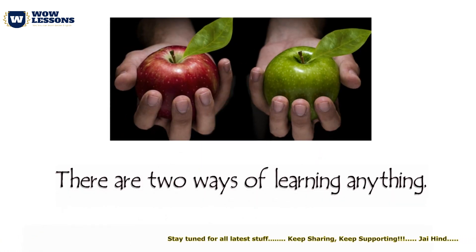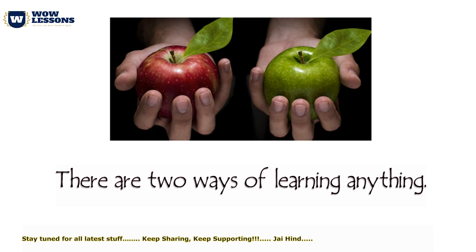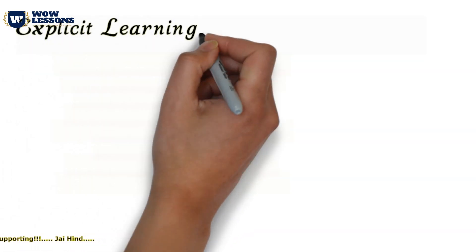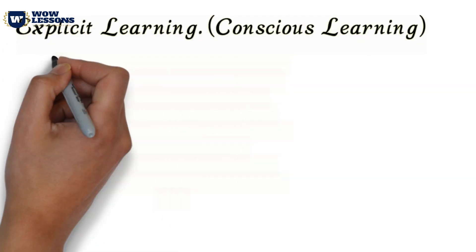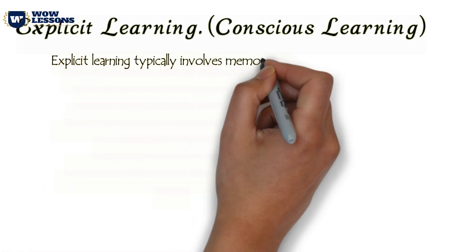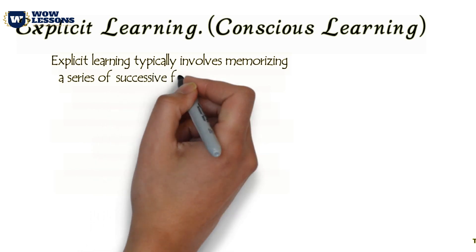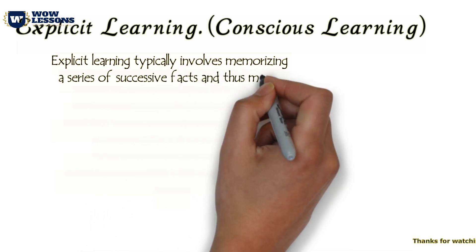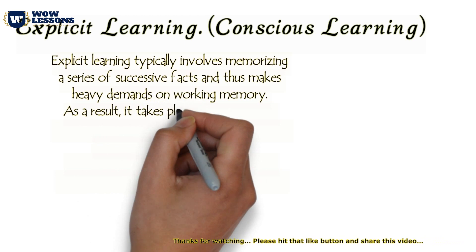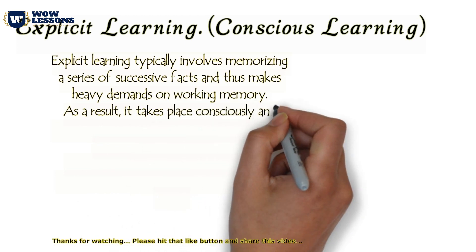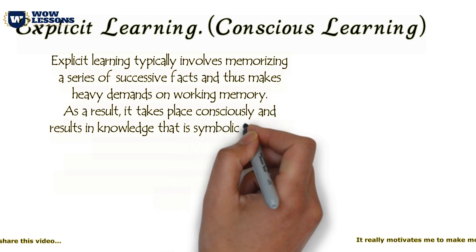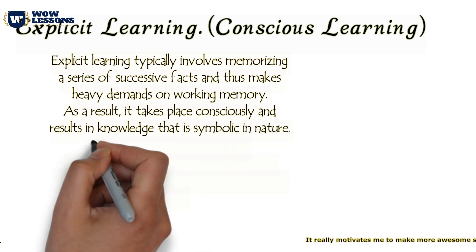There are two ways of learning anything. The first type of learning is explicit learning, which is also called conscious learning. Explicit learning typically involves memorizing a series of successive facts and thus makes heavy demands on working memory. As a result, it takes place consciously and results in knowledge that is symbolic in nature.